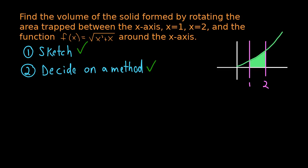Once you decide on a method, I highly recommend writing down the formula for that method that you're going to use. This is the disk method formula when we're rotating around the x-axis, which we are in this problem. This is for rotating around the x-axis or any horizontal line.